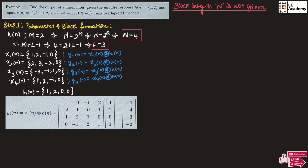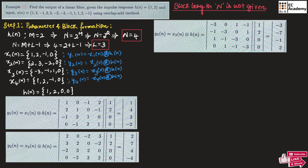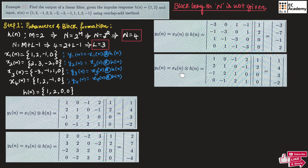For y2(n), we write the circular shift matrix of x2(n) = {2, 3, −2, 0}, multiply by h(n), and obtain y2(n) = {2, 7, 4, −4}. For y3(n), the circular shift matrix of x3(n) = {−3, −1, 1, 0} multiplied by h(n) gives y3(n) = {−3, −7, −1, 2}. Finally, y4(n) = {1, 4, 3, −2}.